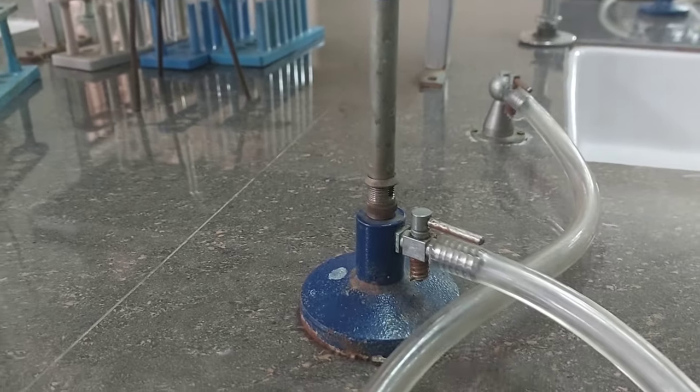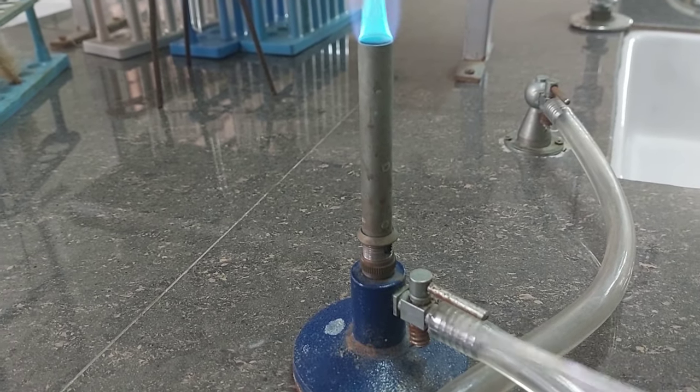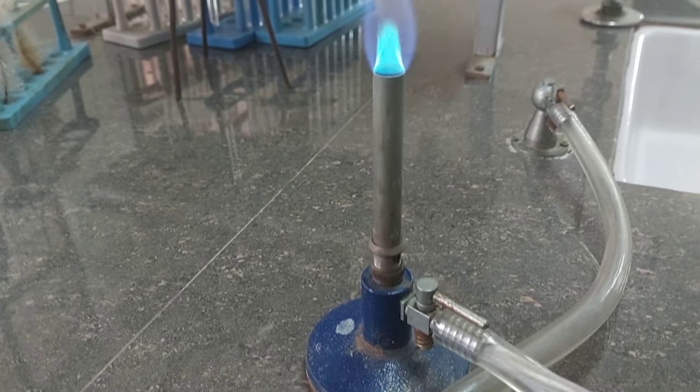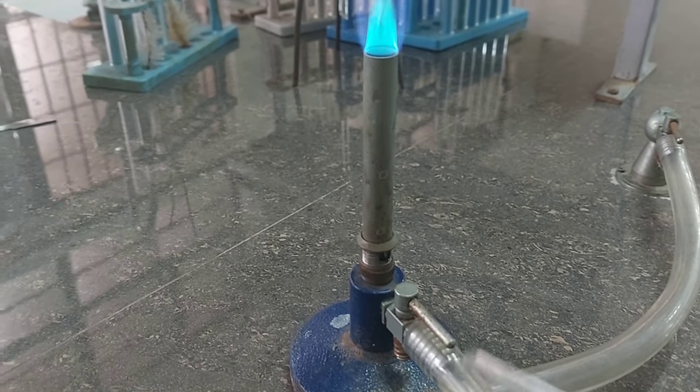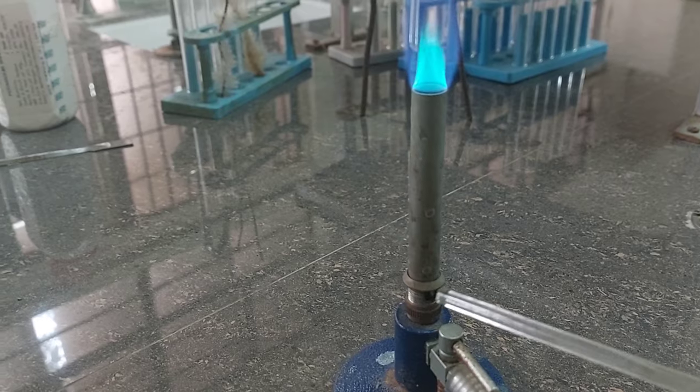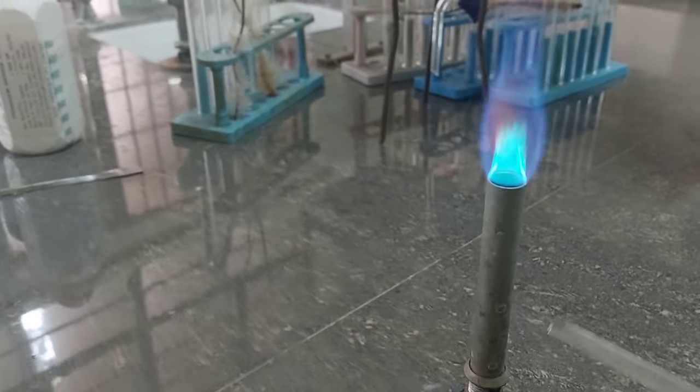This is the Bunsen flame. This is the valve which controls the inflow of the gas which is used as fuel, which is burning, which is mostly methane. This is the hole by which we are going to control the oxygen flow, so air and oxygen are going to undergo combustion.